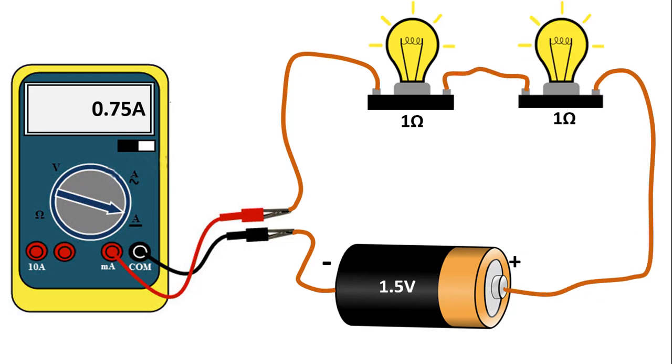Again, if we add another 1 ohm resistance lamp to the circuit connected in series, then we add more resistance to the circuit. Thus, the electrons slow down. In this case, we get a value of 0.75 amps.